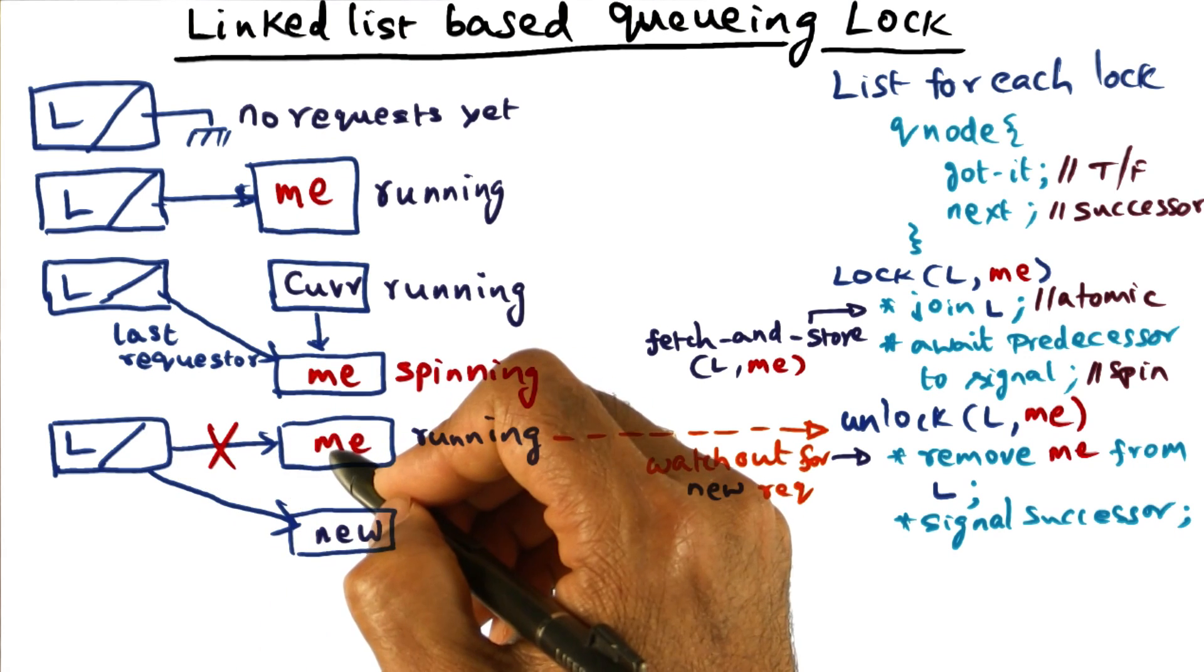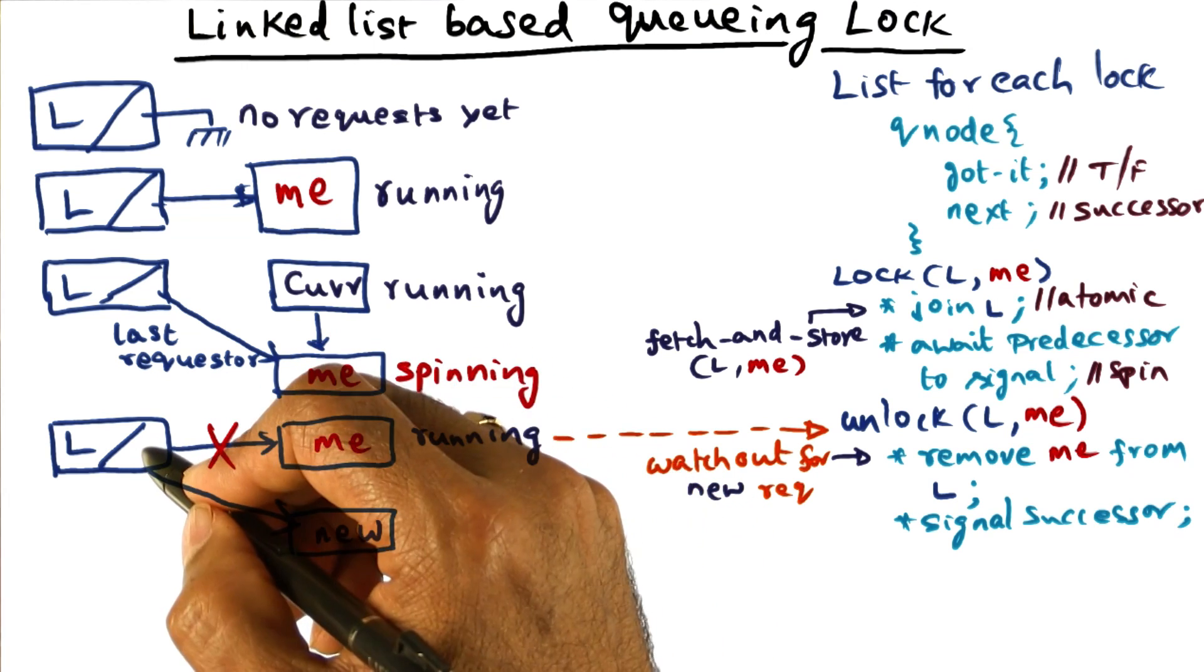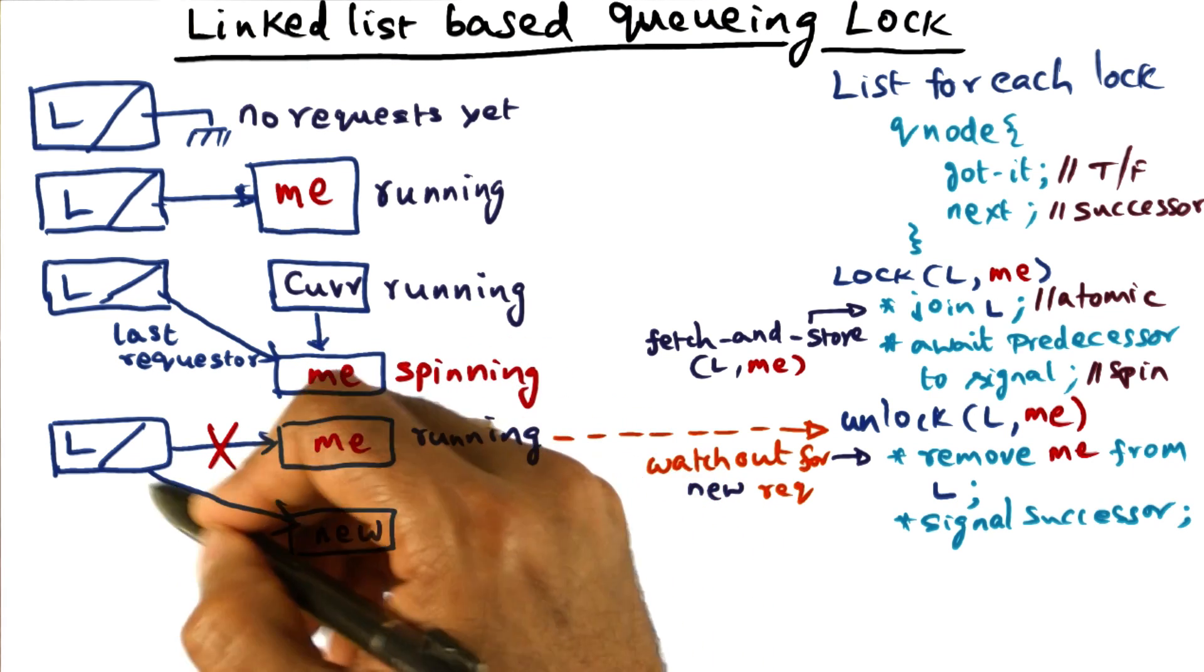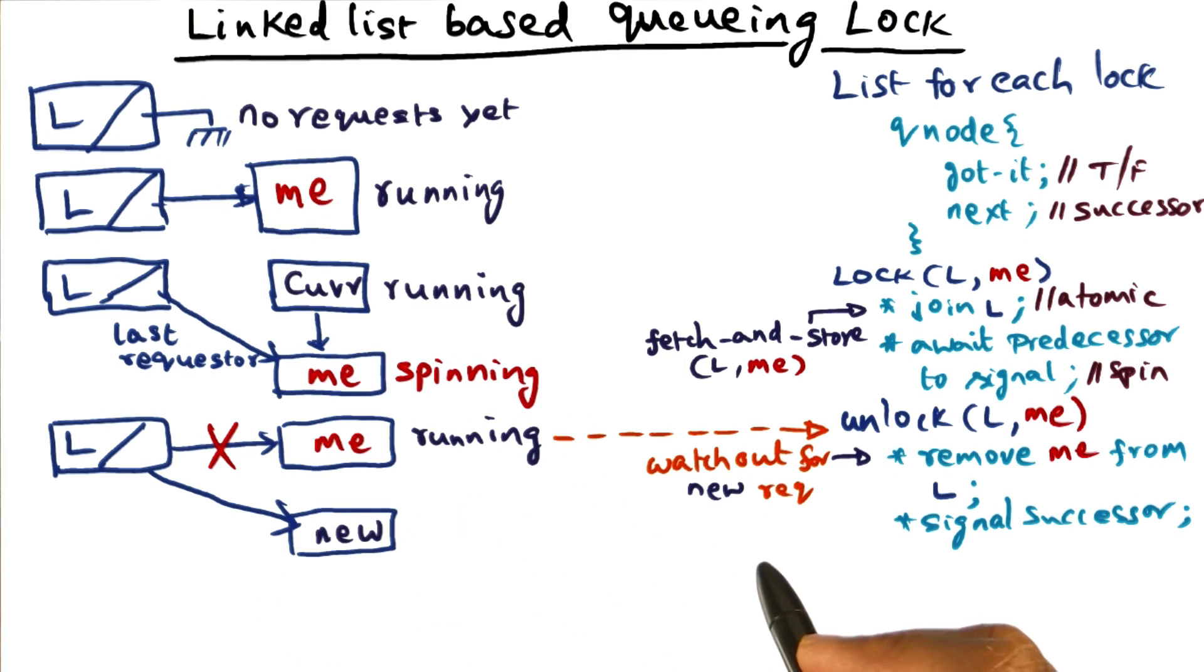And the invariant in this case is that, if he's pointing to me, I can set him to nil. If he's not pointing to me, I cannot set him to nil, because he's pointing to somebody else. That's the invariant I should be looking for. So I need an atomic way of checking for that invariant.